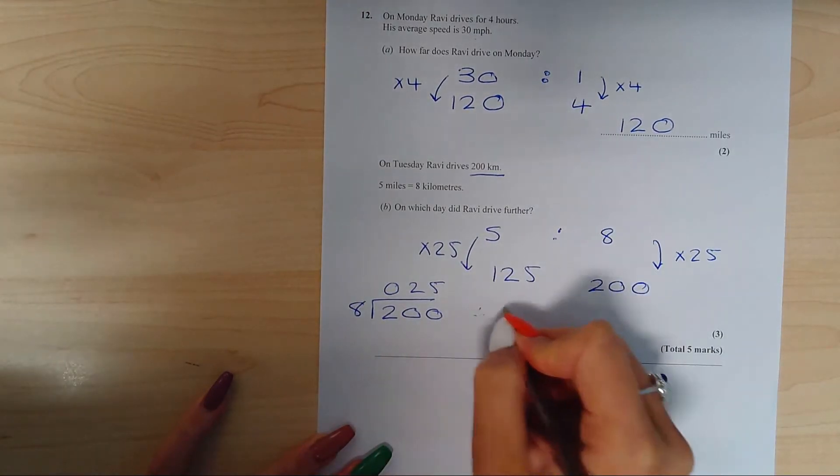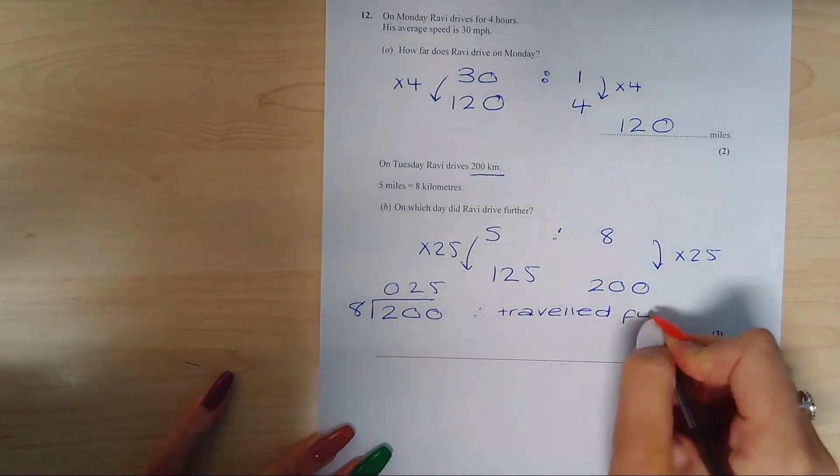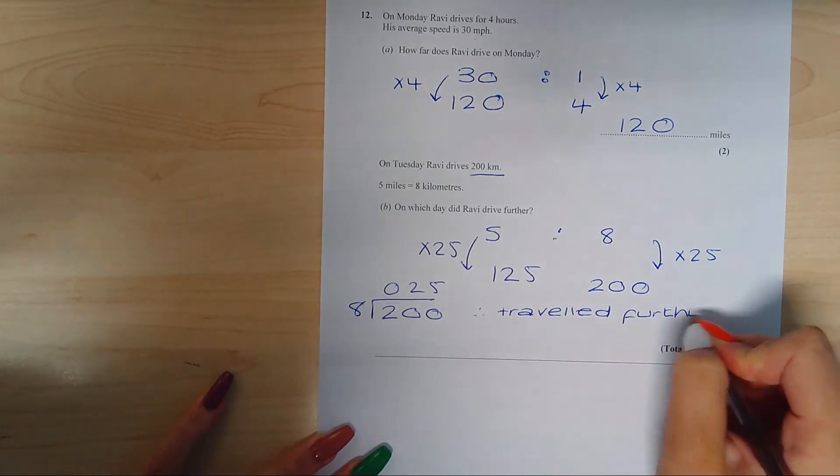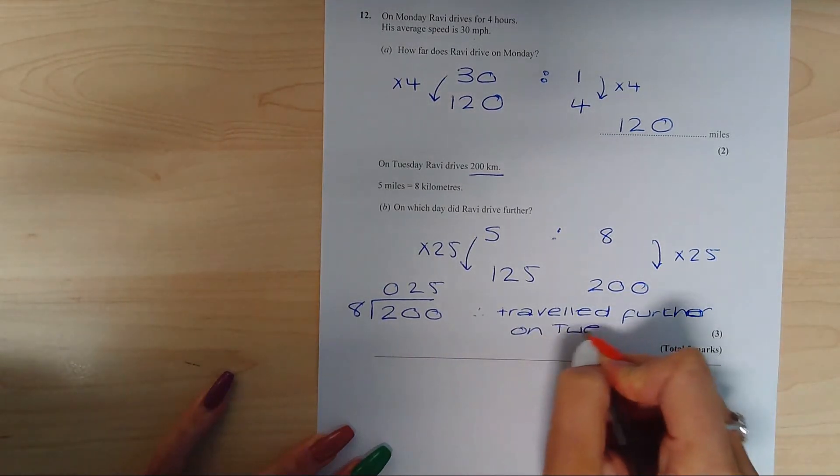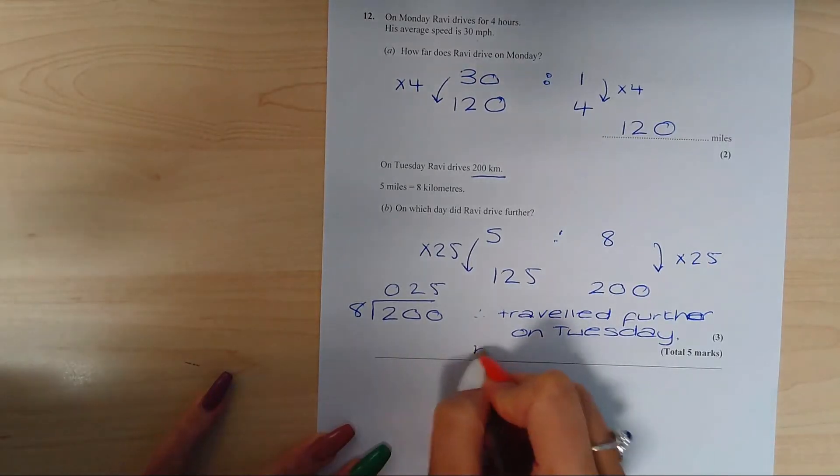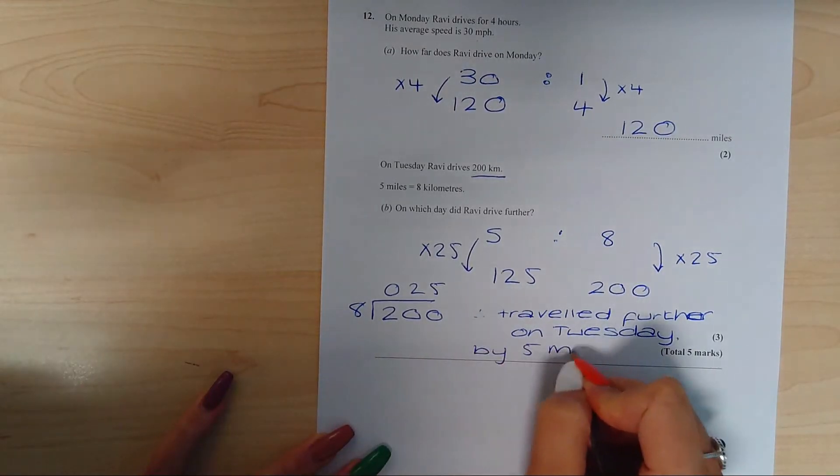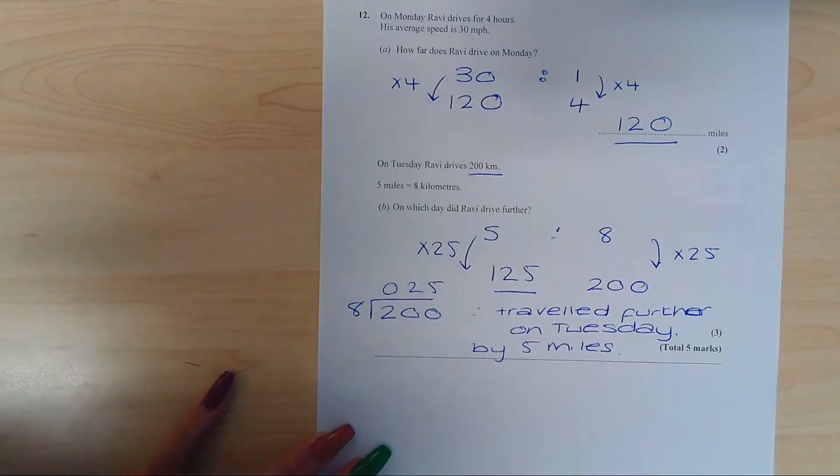He therefore traveled further on Tuesday. And then I would always say by how many, just to be sure. So by five miles, comparing the 125 to the 120 we originally worked out.